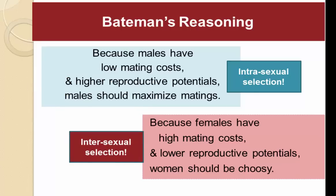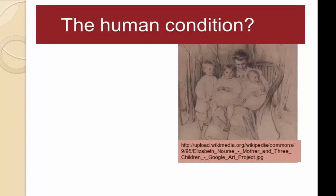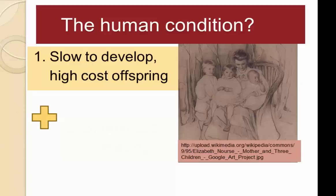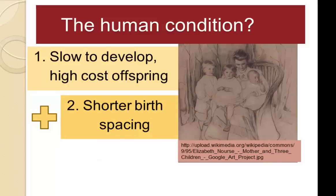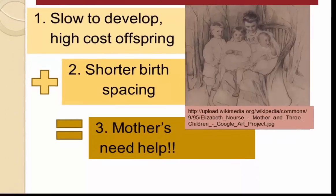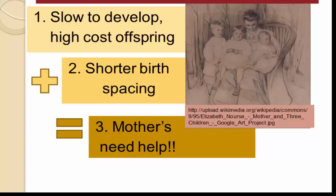Looking at reproduction among humans, there are several distinctive derived features. Human offspring are slow to develop and very high cost. Add to this shorter birth spacings, so human mothers can do what's called stacking of offspring — something we don't see among the other apes. Together these two things add up to human mothers needing help: human mothers can produce more high-cost offspring than they can care for effectively.